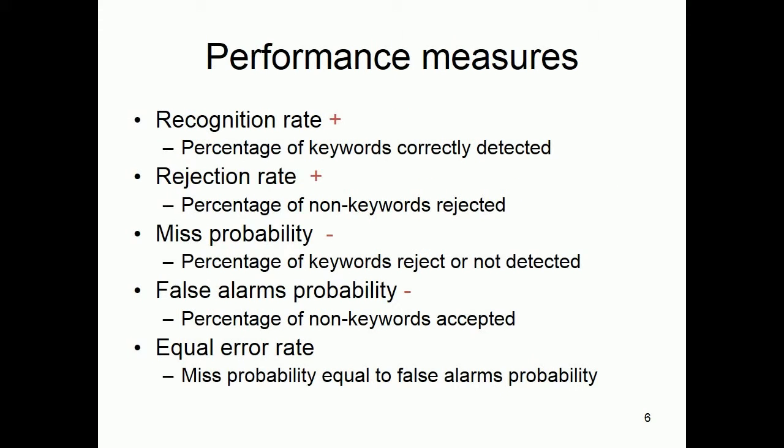Performance measures include: Recognition Rate — the percentage of keywords correctly detected; Rejection Rate — the percentage of non-keywords rejected; Miss Probability — the percentage of keywords rejected or not detected; False Alarms Probability — the percentage of non-keywords accepted; and Equal Error Rate, where miss probability equals false alarms probability.